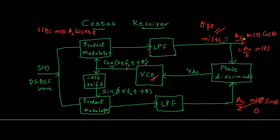Both the I-channel and Q-channel outputs are fed to the phase discriminator, which generates a DC value. This DC value is fed to the voltage controlled oscillator, and it changes the operating point of the VCO. Based on this DC signal, the VCO brings θ down to 0, so the entire system ensures that θ equals 0, matching the transmitter carrier phase.